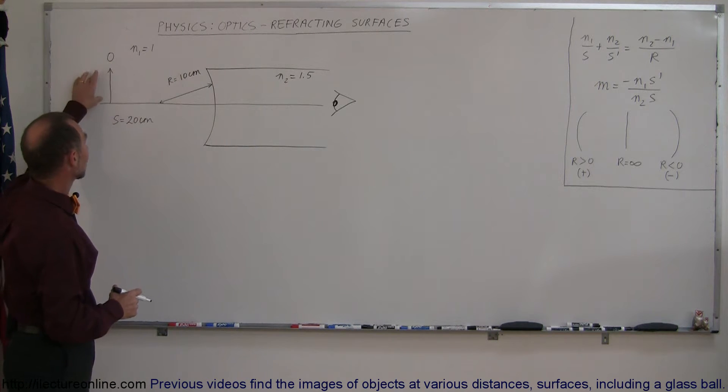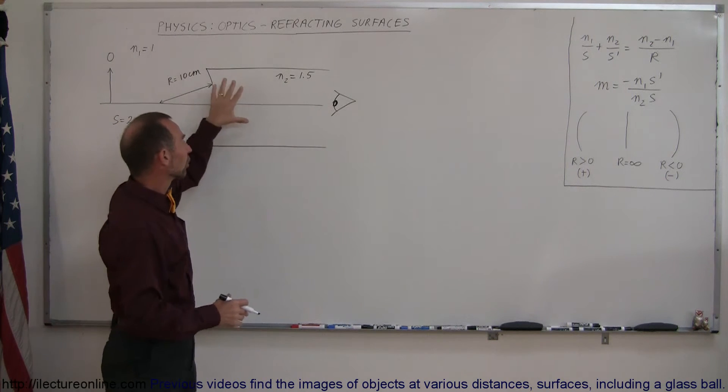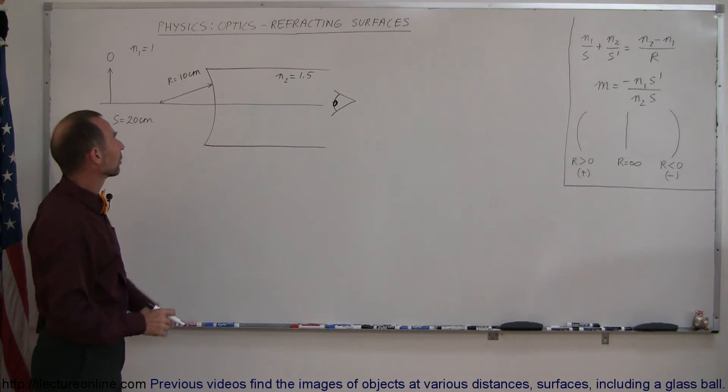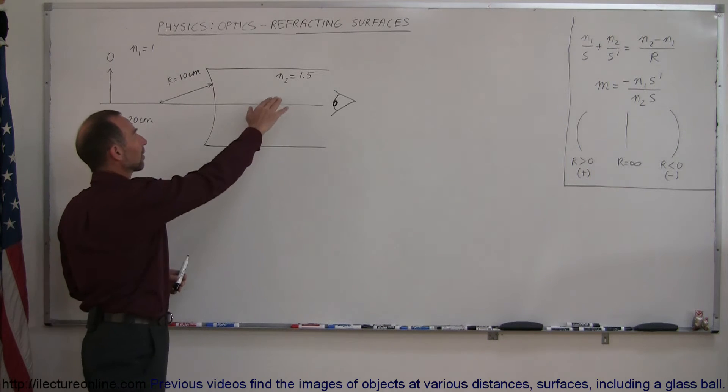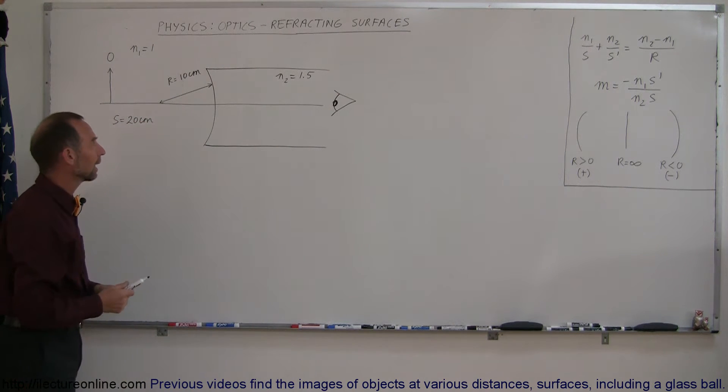Notice here that the object is in air and the observer is looking at the image from the other side of the boundary. And on this side of the boundary, the index of refraction is 1.5, probably glass.